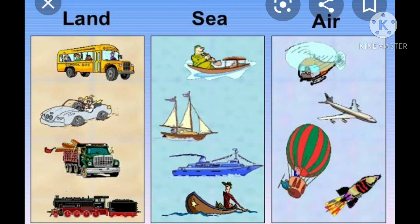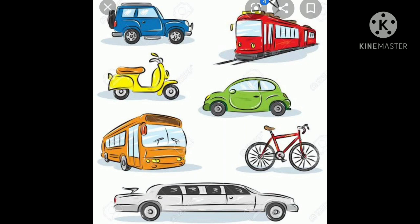Let us discuss each one in detail. First, coming to land transport — you can see some pictures here: jeep, train, scooter, car, bus, cycle. Some vehicles are run by manpower — moving with the help of a man — for example, cycle and rickshaw. Others use petrol or gas engines, and also electric engines for trains.